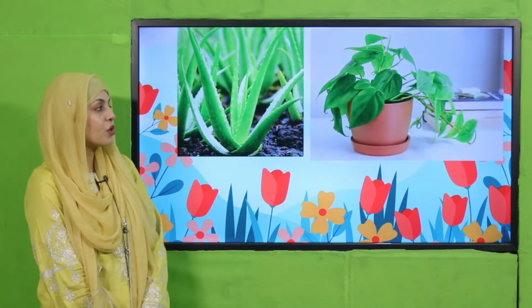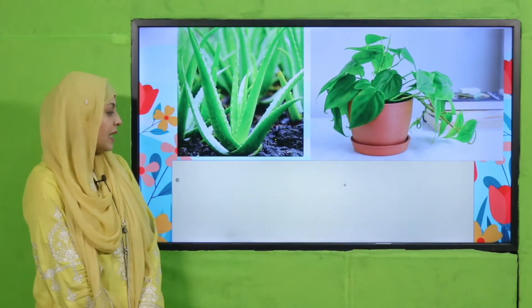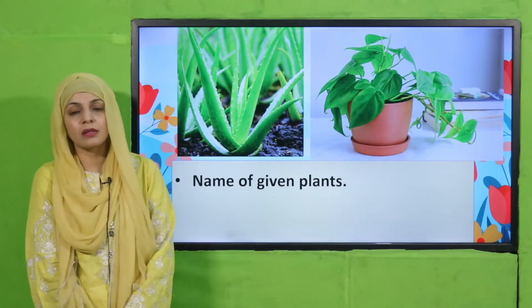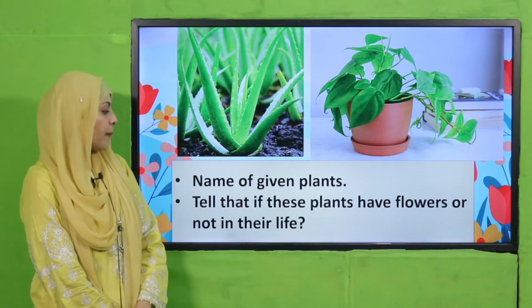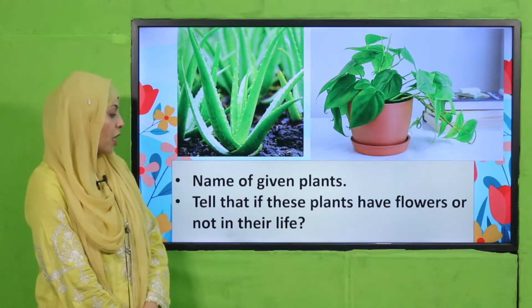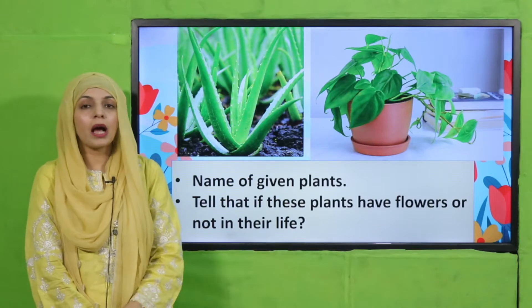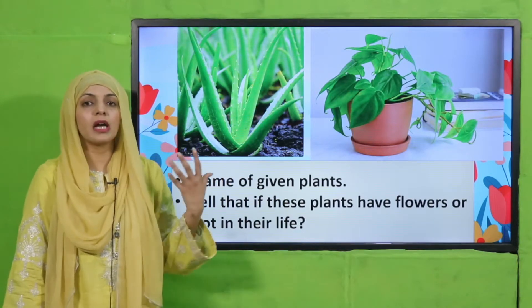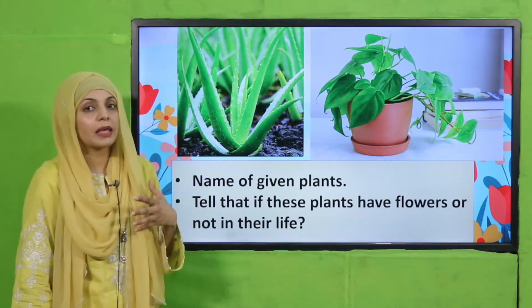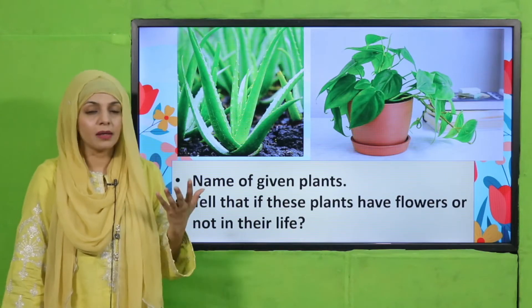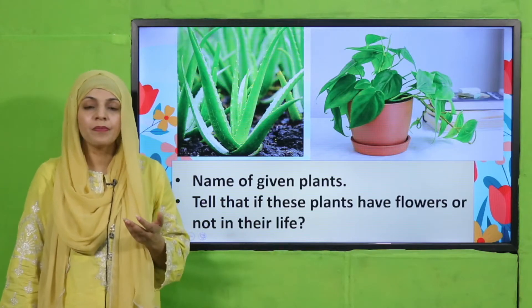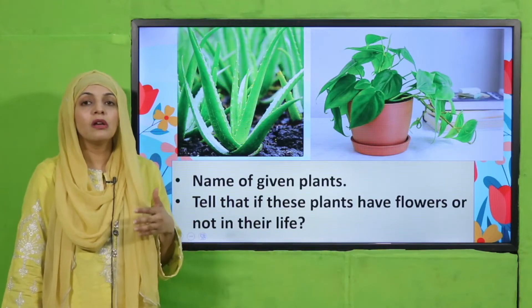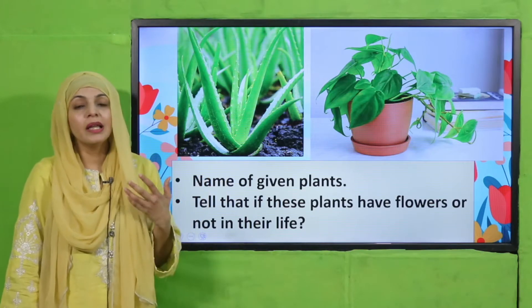Let's start this lecture with an activity. Here you can see some pictures of plants, so quickly have a look at them carefully and name these plants. The first one is aloe vera and the second one is money plant. Tell me if these plants have flowers or not. These are very common plants found in almost every home. No, these plants do not produce flowers — in these plants phool nahi lagte.